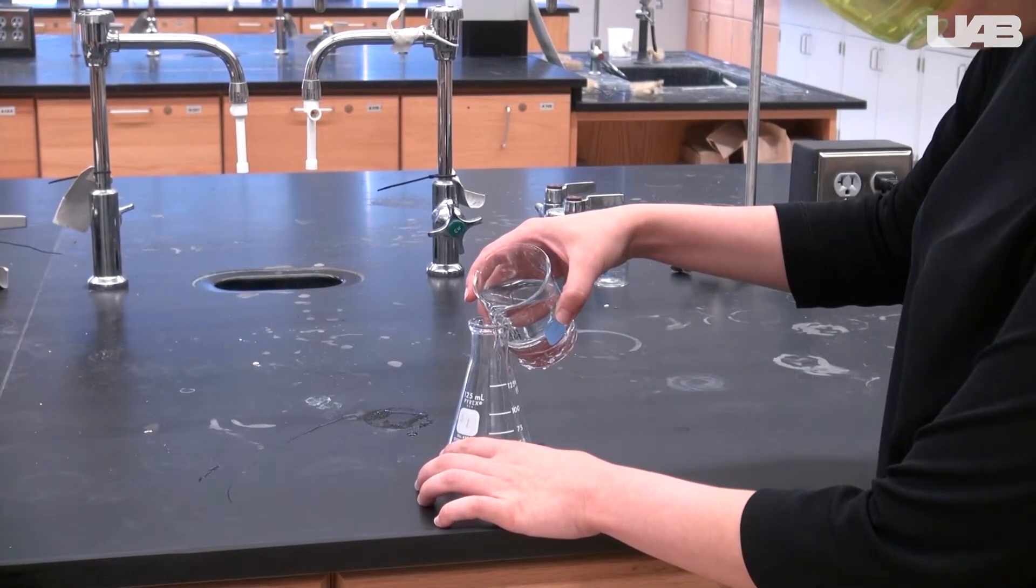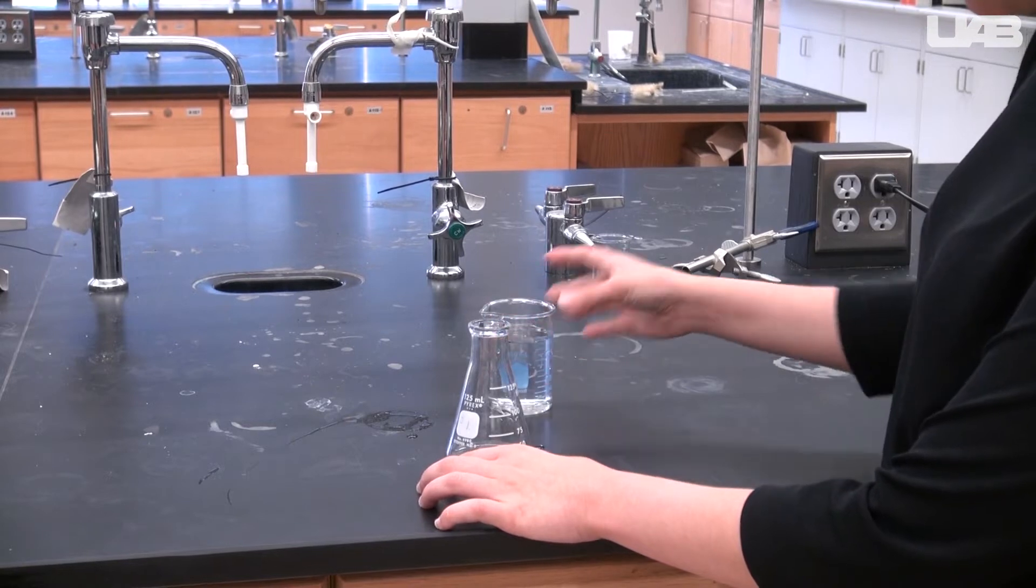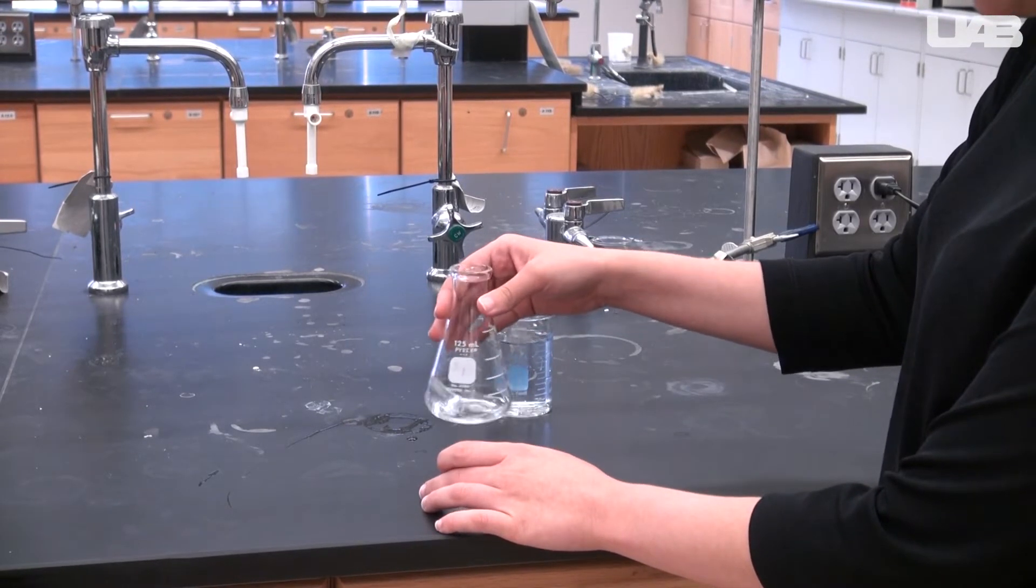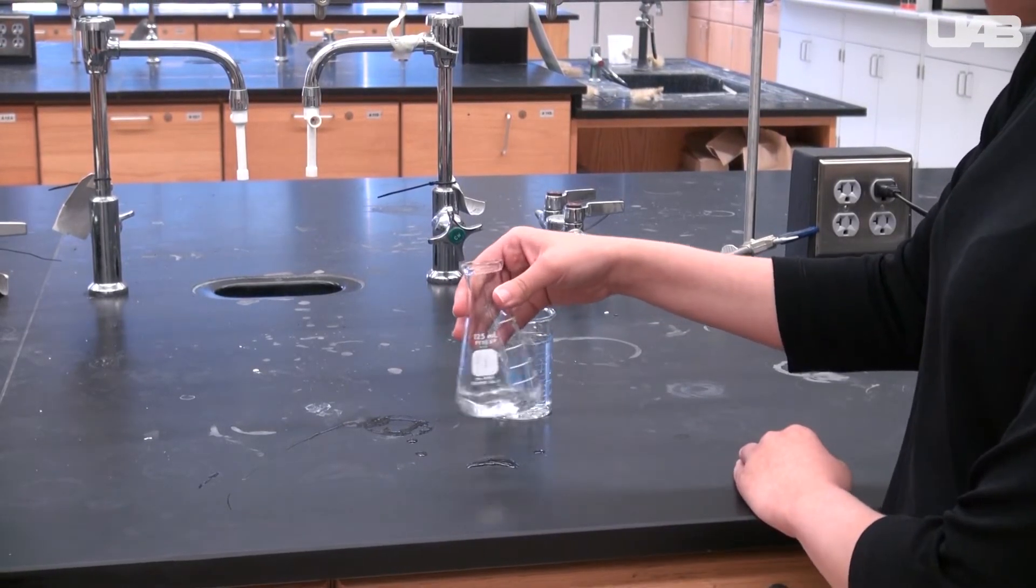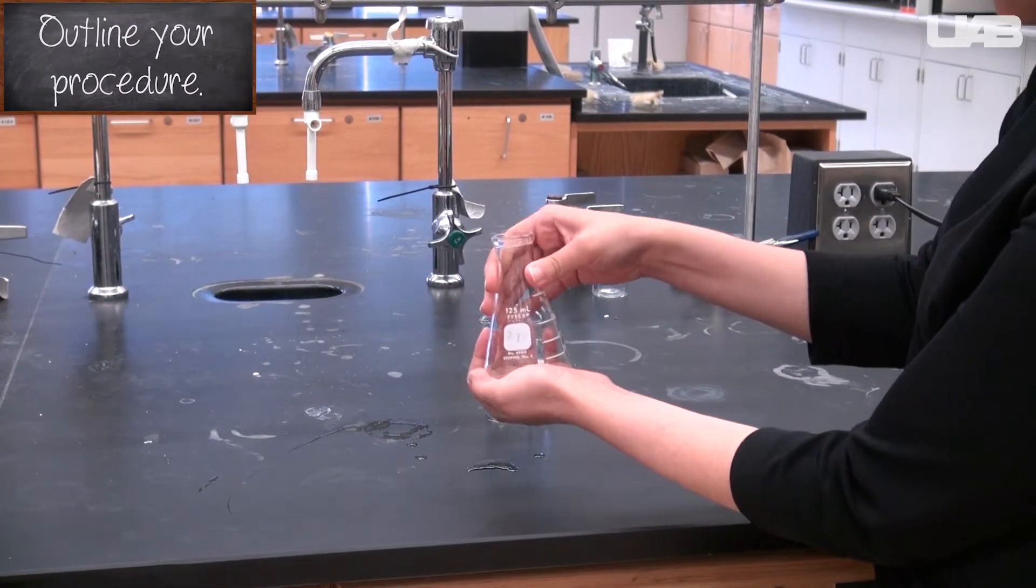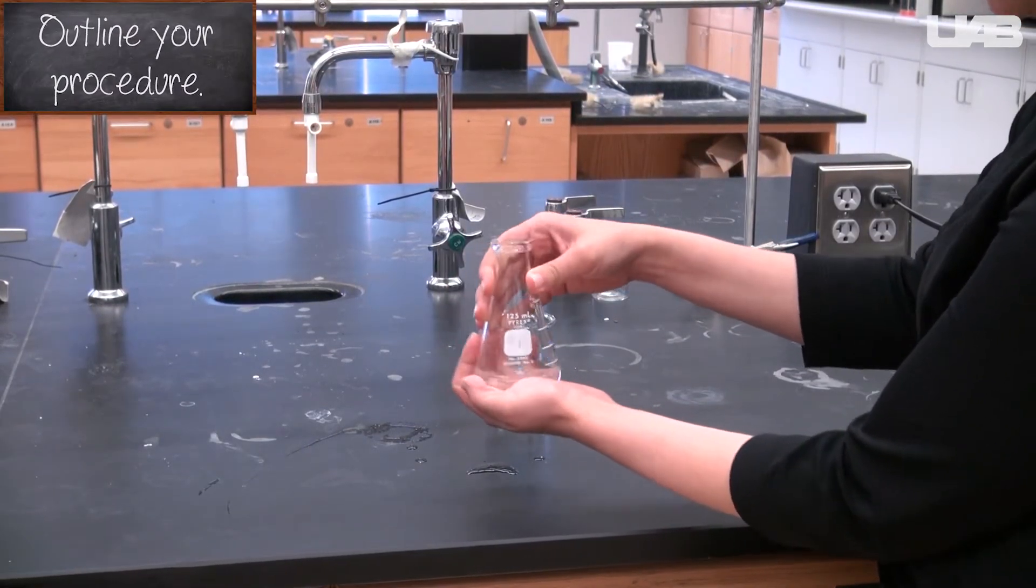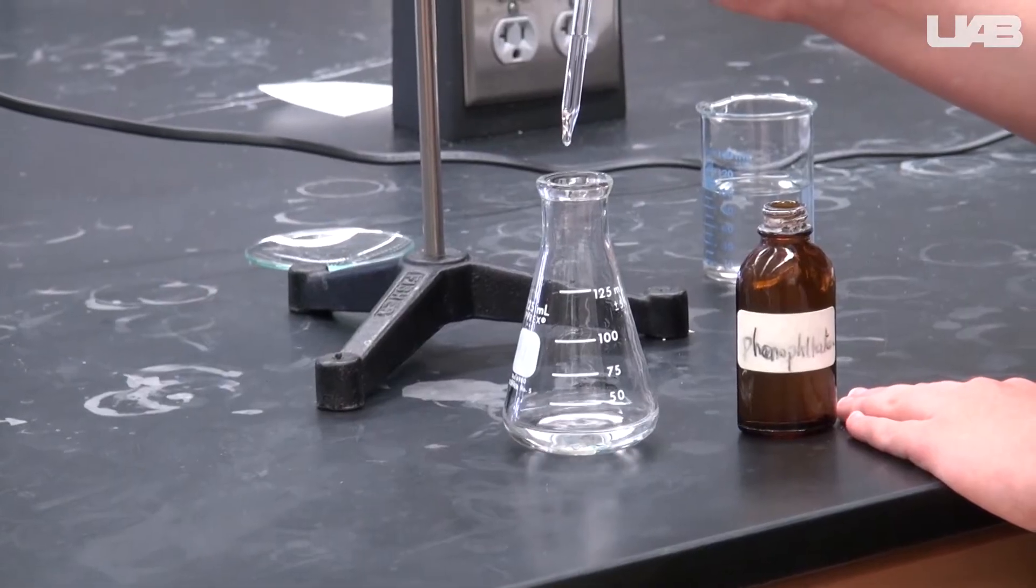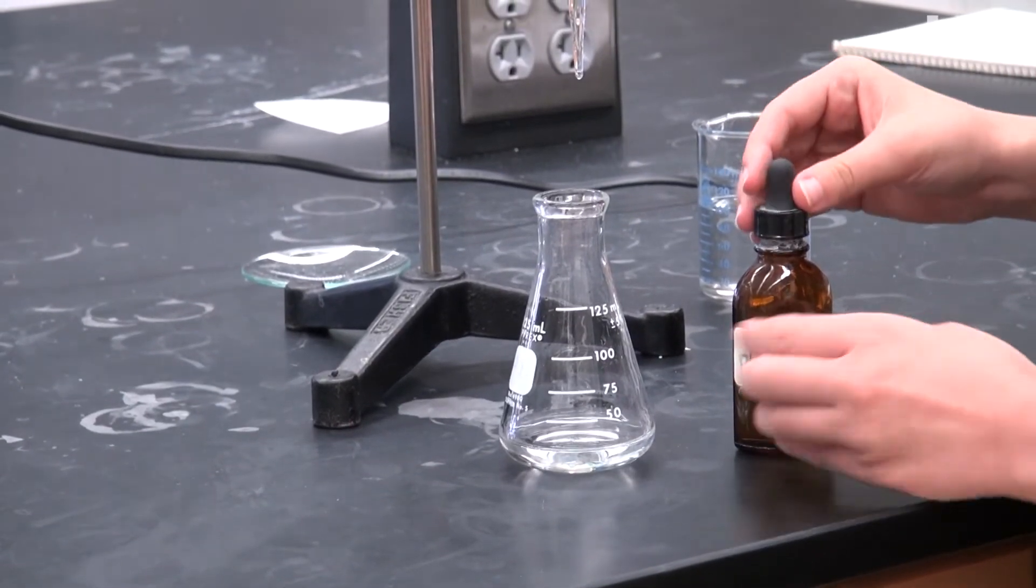Dissolve the solid in about 50 milliliters of water. KHP can take a while to dissolve, so prepare several samples at once so you don't have to wait as long. Cupping the bottom of the flask with your hand will help it dissolve. Once it has dissolved, add one to two drops of phenolphthalein.